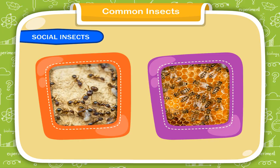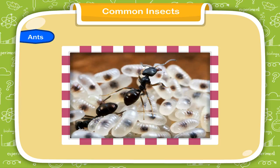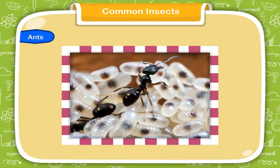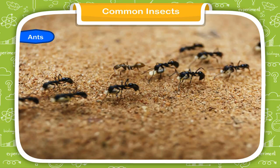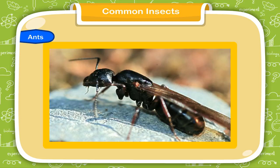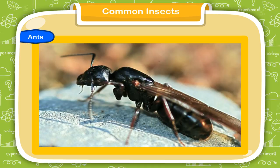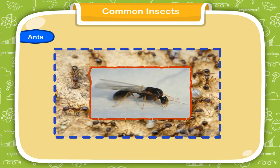Ants. In an ant colony, there is a queen ant who lays eggs, along with male ants who do not work, and female worker ants who do not lay eggs. The queen ant is easy to recognize as she is larger than other ants and has long wings. The male ant also has two pairs of wings, but the female worker ant is small with no wings.